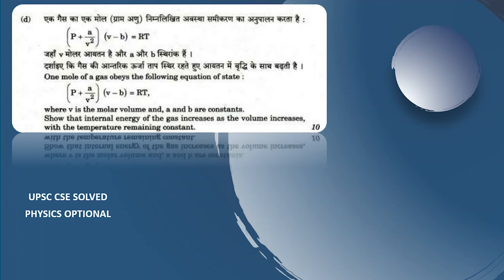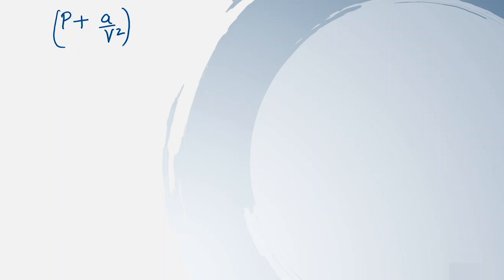Hello everyone. In today's video we will be seeing one question from a previous year paper. In this question we are given a gas obeying this equation of state, that is the real gas equation, where V is molar volume and A and B are constants. We have to show that the internal energy is increasing with increase in volume at constant temperature — meaning this differential should be positive. The equation of state is: (P + A/V²)(V − B) = RT.